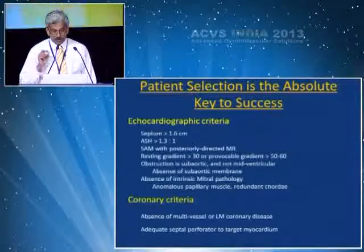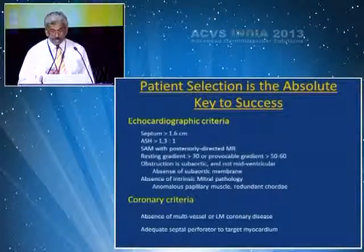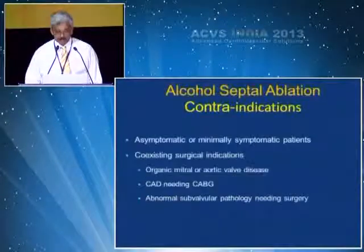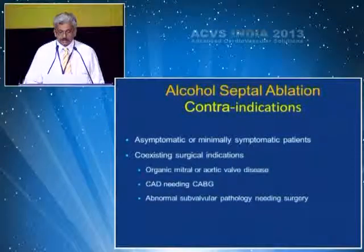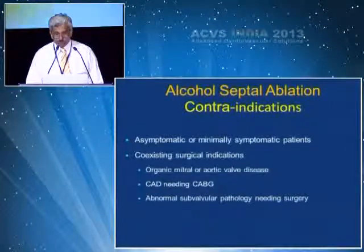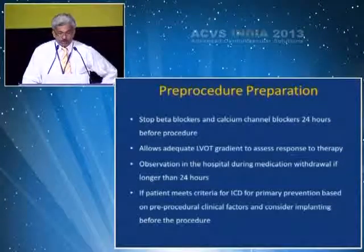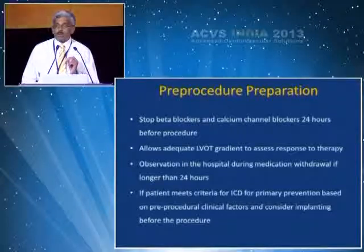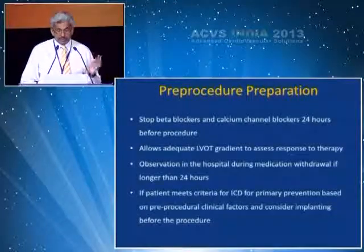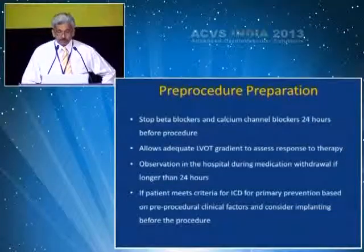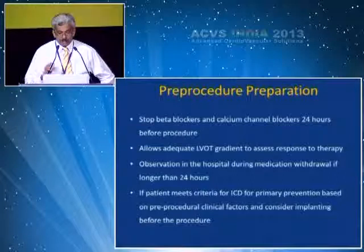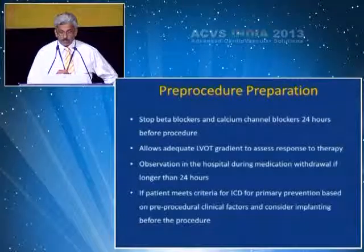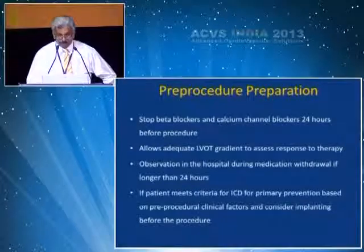Coronary artery criteria are also important. You should have absence of multi-vessel or left main coronary artery disease, and the septal perforator should be large enough to target the myocardium at risk. Contraindications include asymptomatic or minimally symptomatic patients, coexisting surgical conditions like organic mitral valve or aortic valve disease, CABG patients with severe coronary artery disease, and abnormal subvalvular pathology. Pre-procedure preparation: stop beta blockers and calcium channel blockers 24 hours prior to allow accurate LVOT gradient assessment and to assess response to therapy. Patients with arrhythmias meeting ICD criteria for primary prevention should have the ICD placed before the alcohol septal ablation.